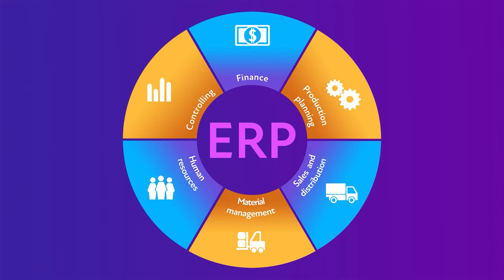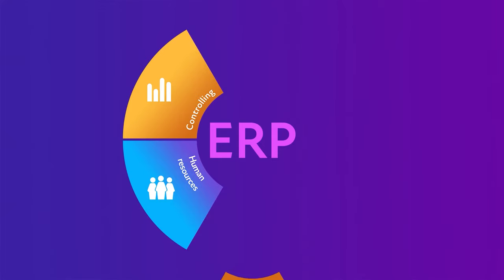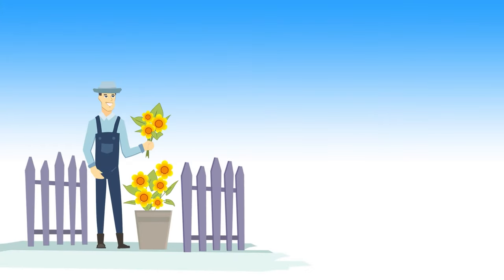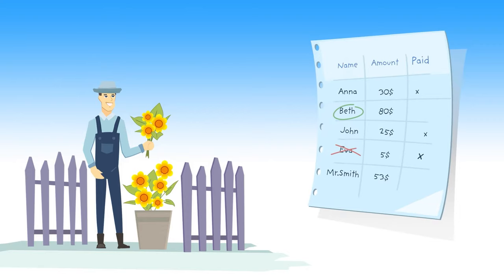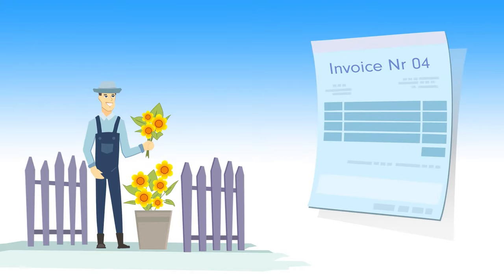I will try to explain it to you on the example of the company's development. Let's imagine that you have created a small business. For example, you have some flowers in your garden and you start to sell them. You don't have many sales, so you start using just paper to create invoices. Later you became more modern and started to use Word to create invoices and Excel to control accounting.